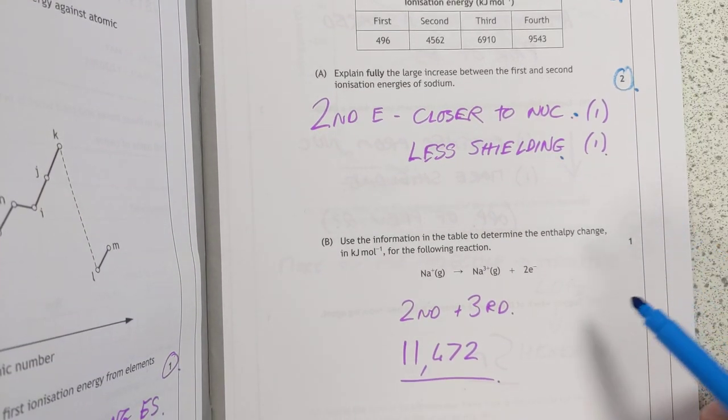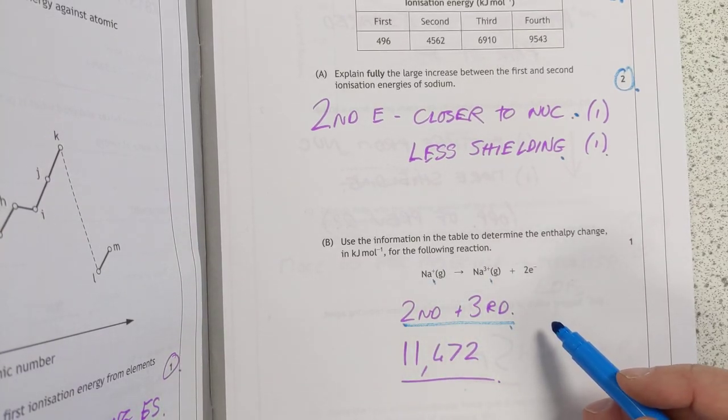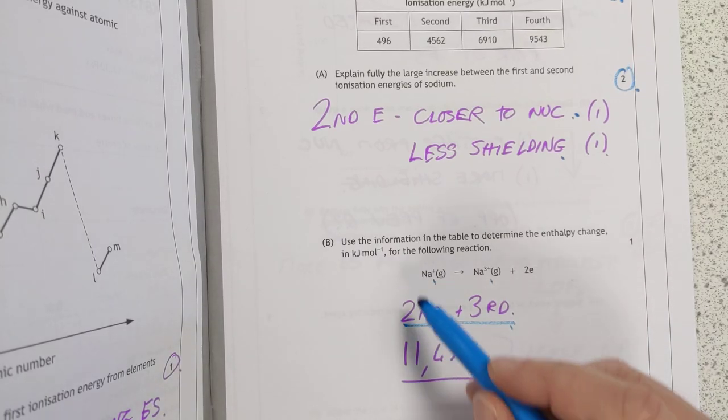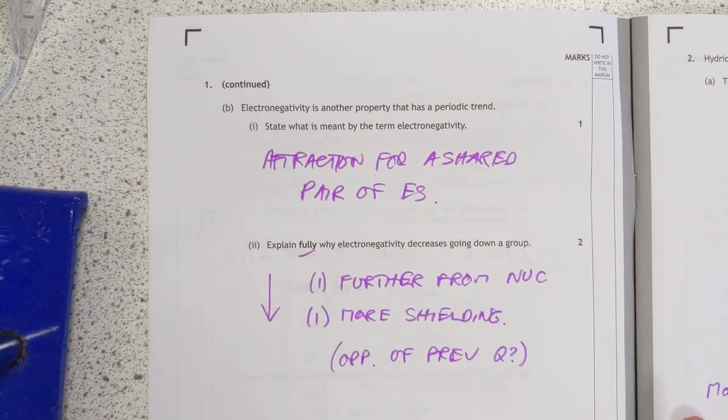Use information to determine... So we're going from 1 plus to 3 plus. So we need the second and the third ionization energies. Add them together, you get that. Don't put the units of course, because they're in the question.